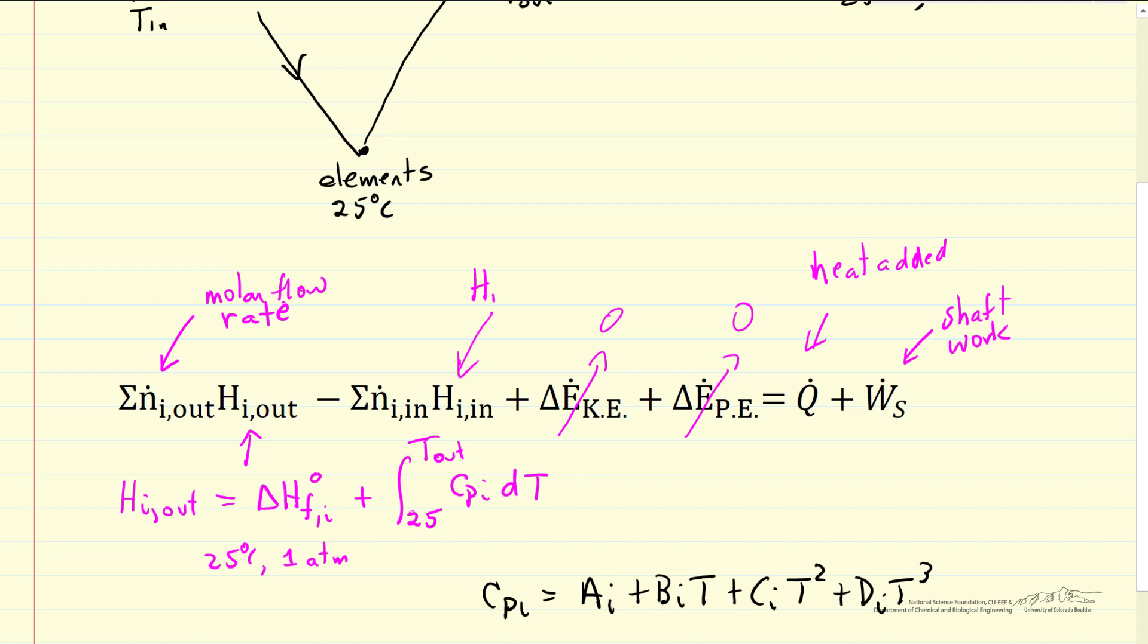H for component I into the system is equal to delta H of formation of component I at standard condition, 25 degrees, and then the integral from 25 to the inlet temperature, heat capacity, a temperature dependent heat capacity integrated over that temperature. This then allows us to calculate, for example, the heat added to or removed from the system, or the outlet temperature if we know what heat is added and how much conversion we have.